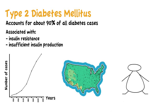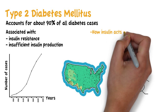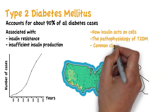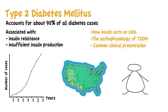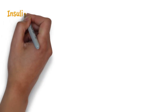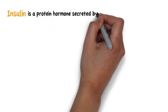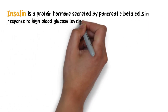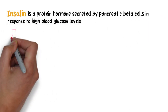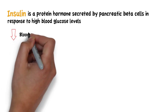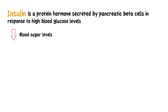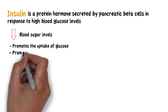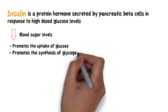In this video, we will explain how insulin acts on cells, the pathophysiology of type 2 diabetes, and its common clinical presentation. Insulin is a protein hormone secreted by pancreatic beta cells in response to high blood glucose levels. It works to decrease blood sugar levels by promoting the uptake of glucose by muscle and adipose tissue, as well as promoting the synthesis of glycogen.